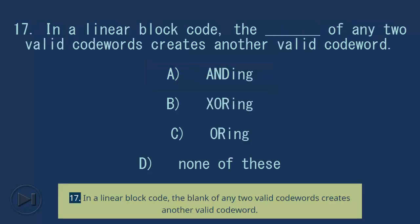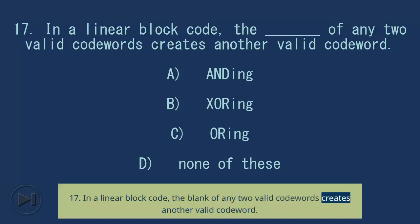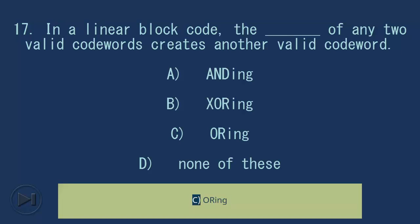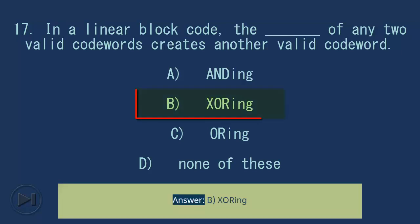Question 17: In a linear block code, the blank of any two valid code words creates another valid code word. A) AND, B) XOR, C) OR, D) none of these. Answer: B, XOR.